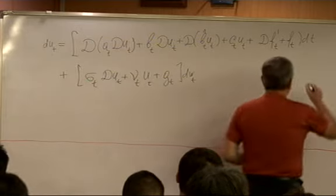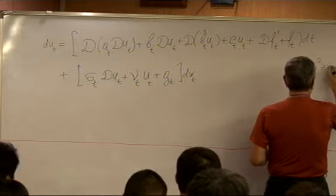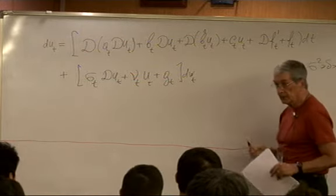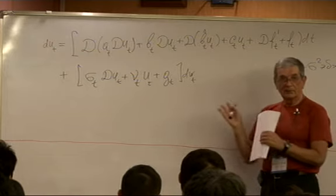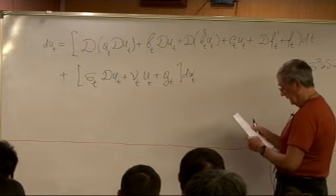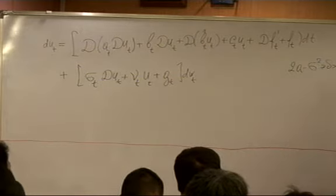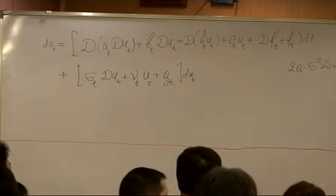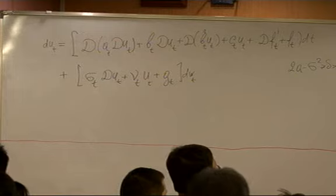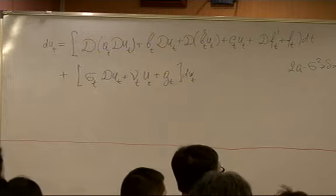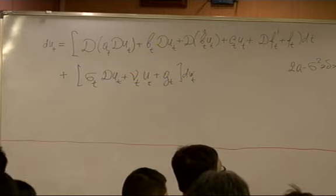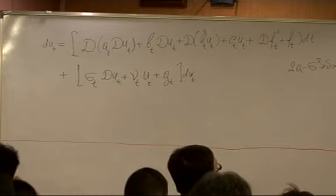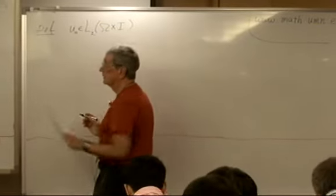The standing assumption is that 2A minus sigma square is bigger than a constant delta bigger than zero. And all the coefficients are bound, and they are very measurable in X, predictable in T and omega, so that the whole thing makes sense. I is our interval where this equation is considered.